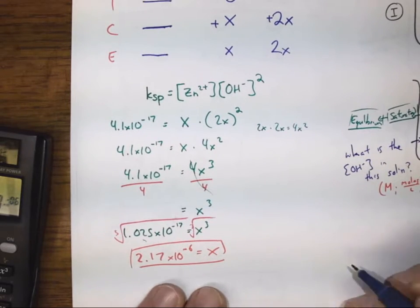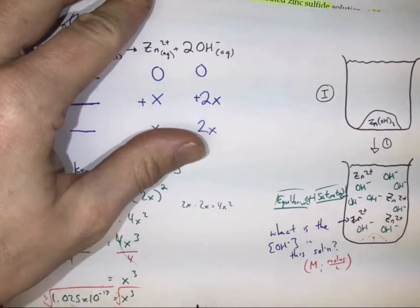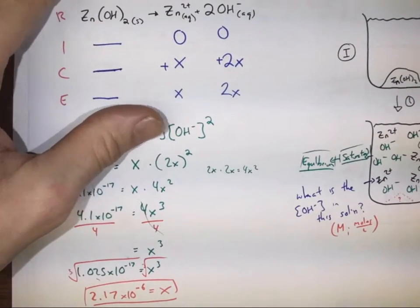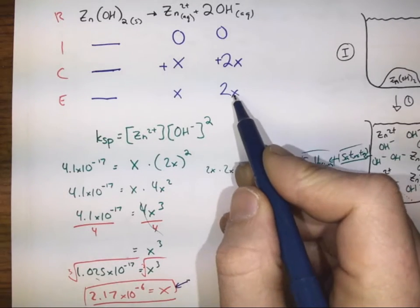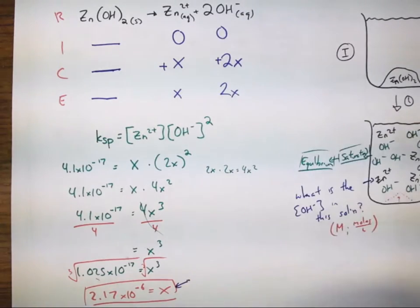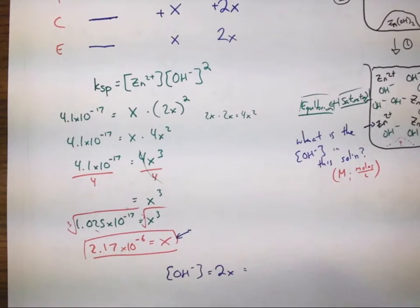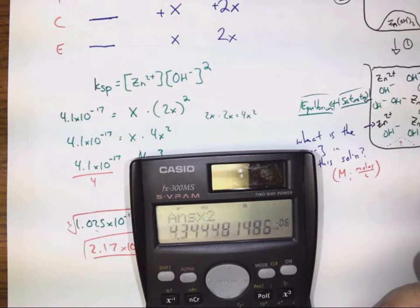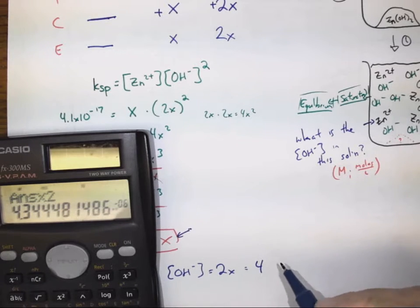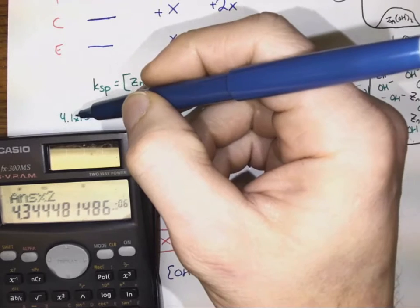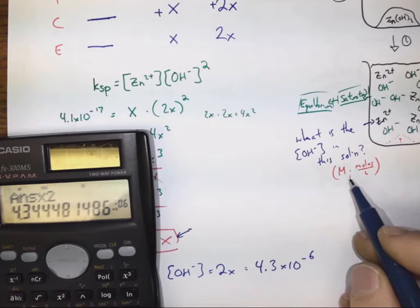We're not done because we weren't asked what x is — we were asked about the concentration of hydroxide in the solution. x was the concentration of zinc. We want the concentration of hydroxide, which is 2x. So the concentration of hydroxide ions equals 2x, which is 2 times 2.17 times 10 to the negative 6. I get 4.34, and rounding to the appropriate 2 significant figures gives 4.3 times 10 to the negative 6 moles per liter. That is our final answer.